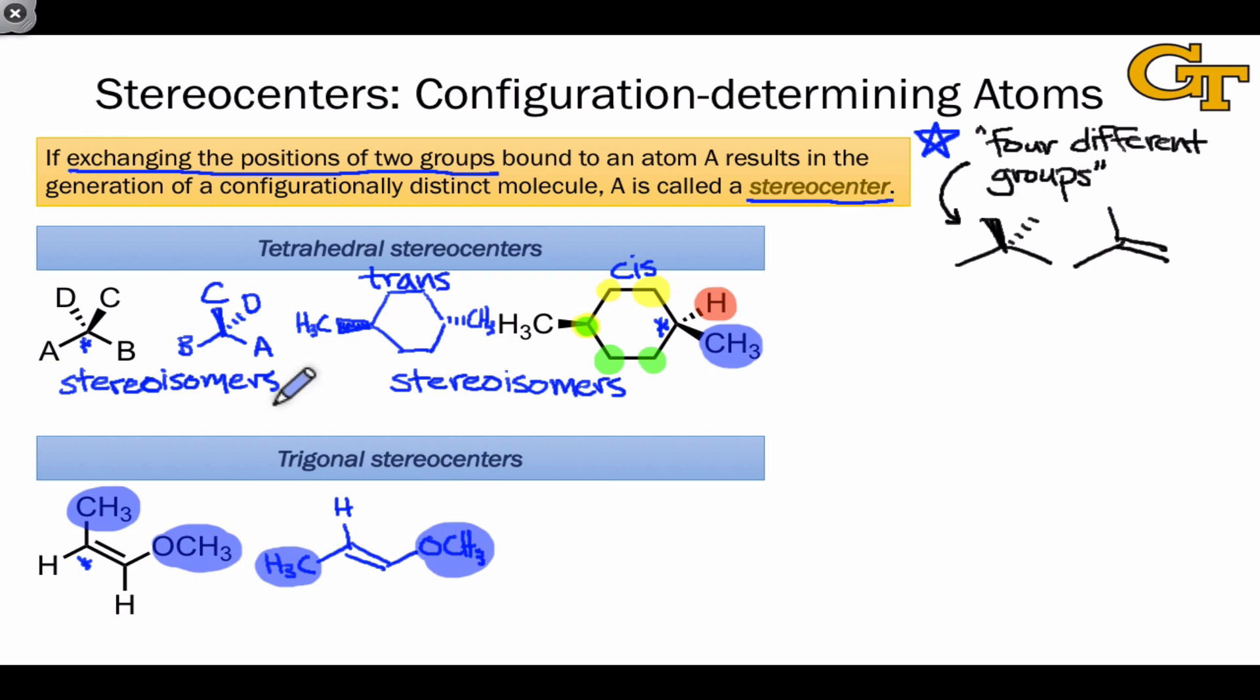since the CH3 and the methoxy group go from being in a cis orientation in the original to a trans orientation in the product of exchanging the groups. Because these are stereoisomers, then, the starred carbon is a stereocenter.